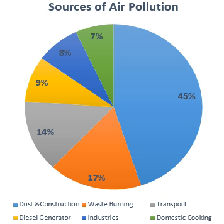Some goals set for the future include: introducing 1,000 electric public transport buses, meeting a goal of 25% of private vehicles to be electric by 2023, providing farmers with a Happy Seeder machine which converts agricultural residue to fertilizer, analyzing health data and studying efficiency of room filtration systems, launching new citizen science programs to better document exposures, and reducing carbon emissions. According to the Intergovernmental Panel on Climate Change, to limit warming well below 2°C, CO2 emissions should decline by about 20% by 2030 and reach net zero around 2075; to limit warming below 1.5°C, CO2 emissions should decline by 50% by 2030 and reach net zero by around 2050.